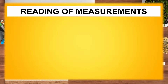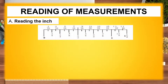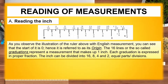Reading of Measurements. A. Reading the Inch. As you observe the illustration of the ruler above with English measurement, you can see that the start of it is zero, hence it is referred to as its origin. The sixteen lines, or so-called graduations, represent a measurement that makes up one inch. Each graduation is expressed in proper fraction. The inch can be divided into sixteen, eight, four, and two equal parts or divisions.